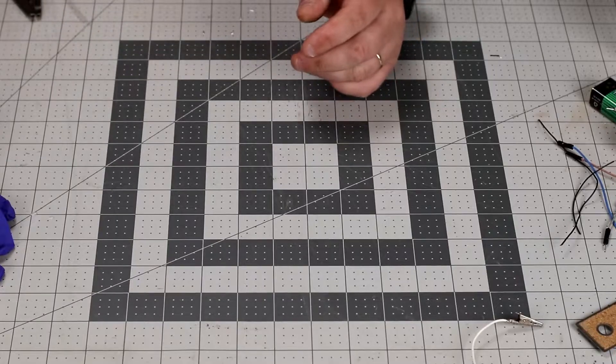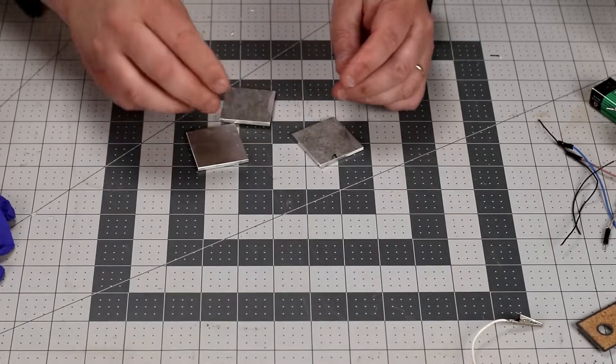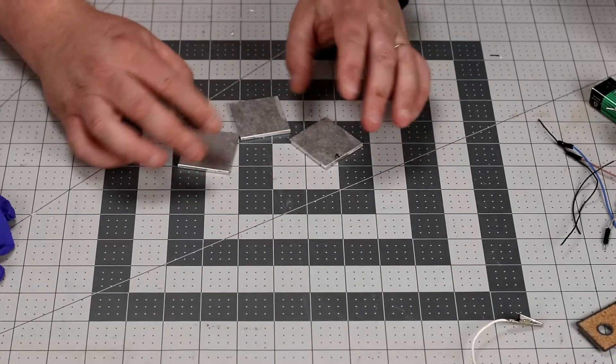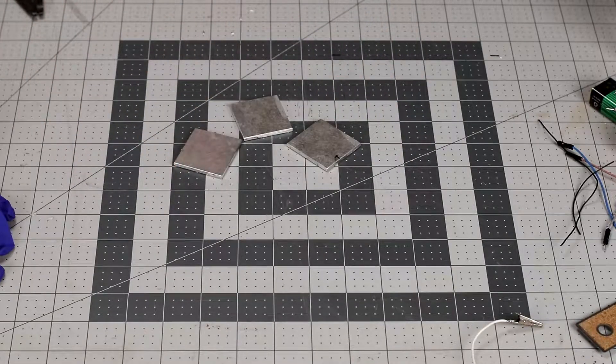First off to get started I'm going to take my aluminum squares here that I cut and I am going to clean them up real good with some sandpaper. Polish them up till they're nice and shiny and get them ready to etch.